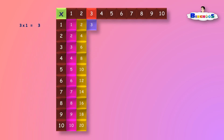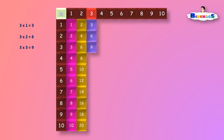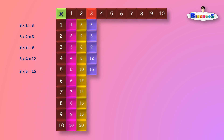3 times 1 is equal to 3. 3 times 2 is equal to 6. 3 times 3 is equal to 9. 3 times 4 is equal to 12. 3 times 5 is equal to 15.